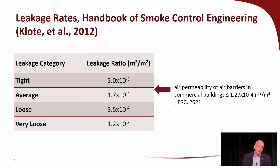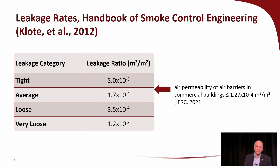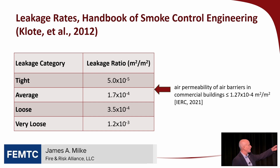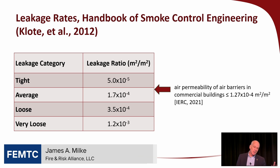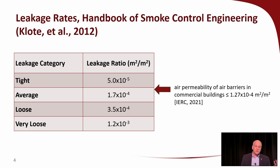For exterior walls, there are leakage categories in the table: tight, average, loose, and very loose. But what do you think — is that wall loose? Is it very loose? There's no description of what constitutes a loose wall. And this data in the handbook is from information from buildings in North America, largely from the 1970s.